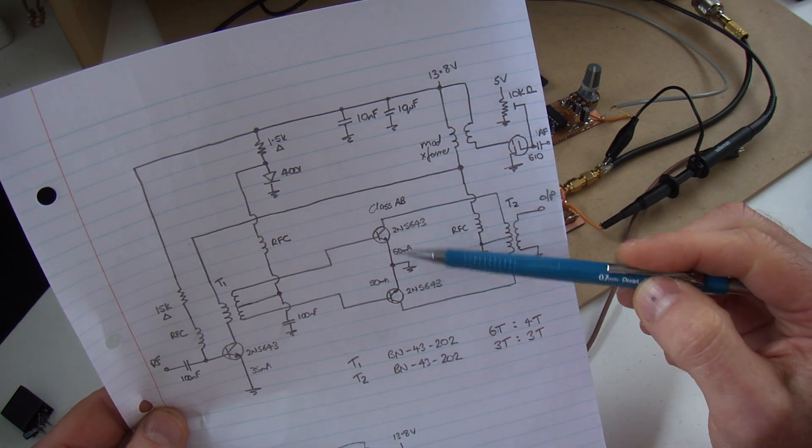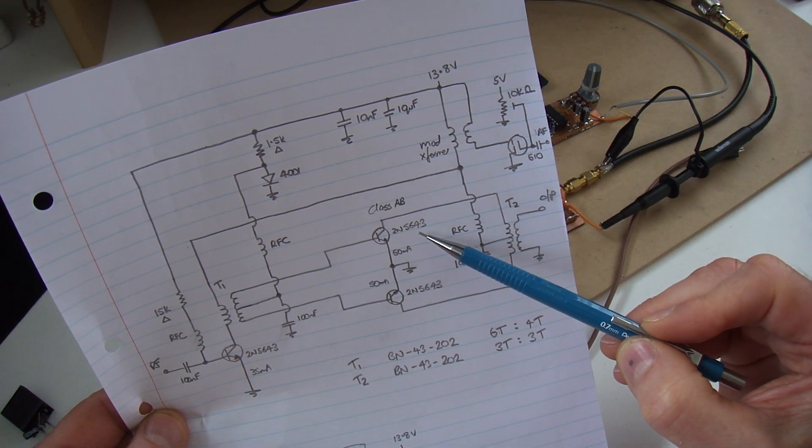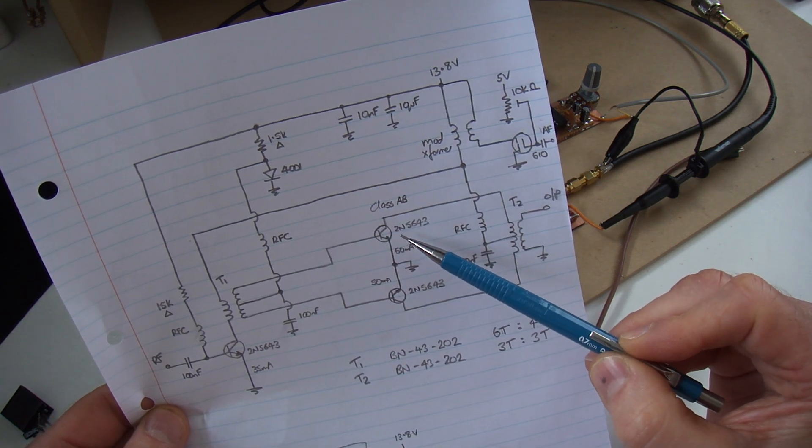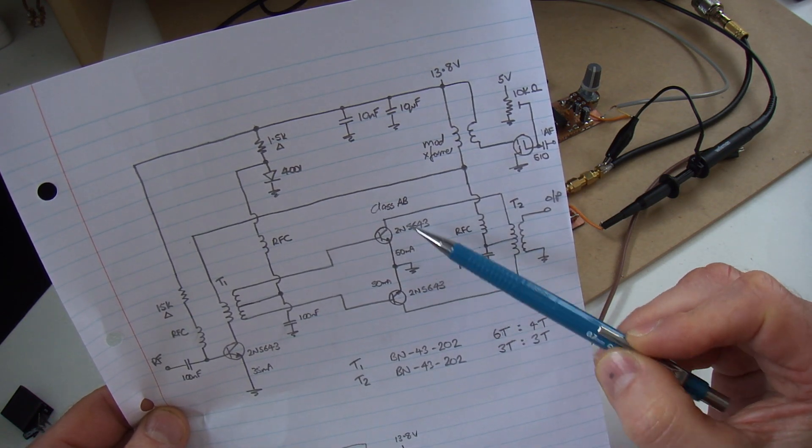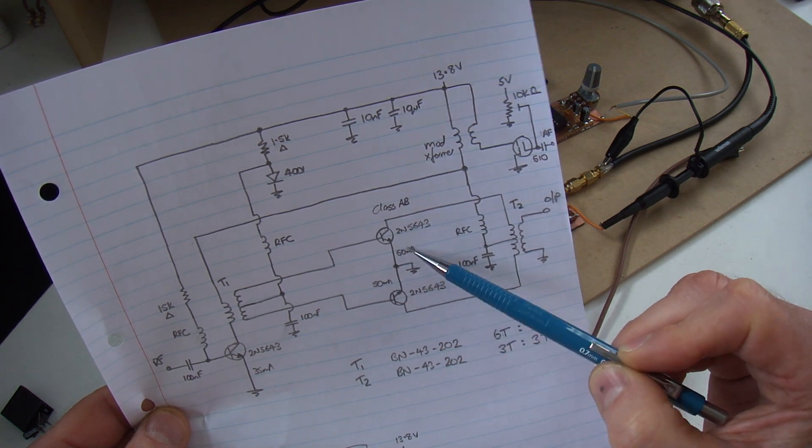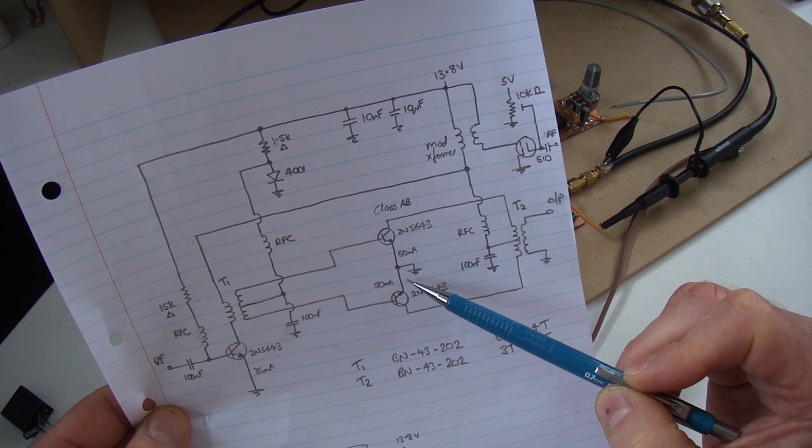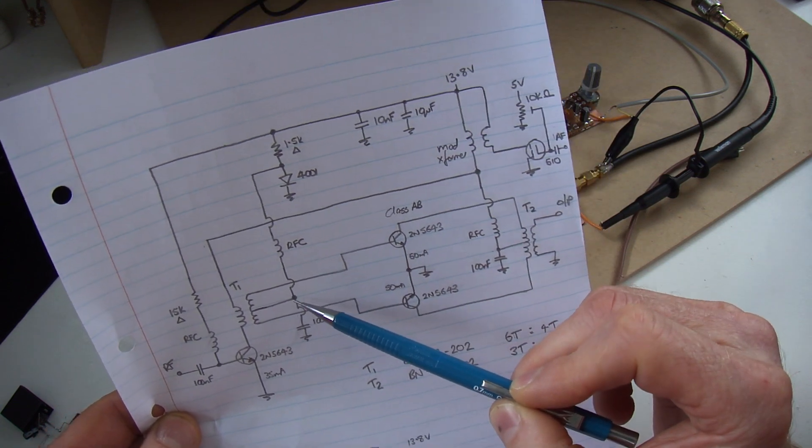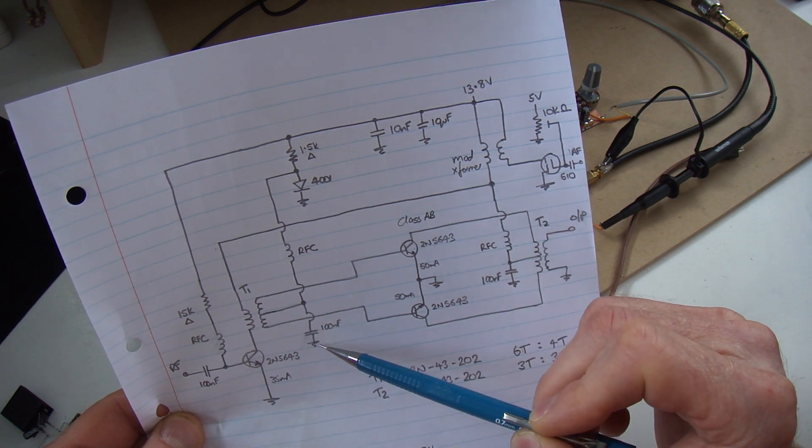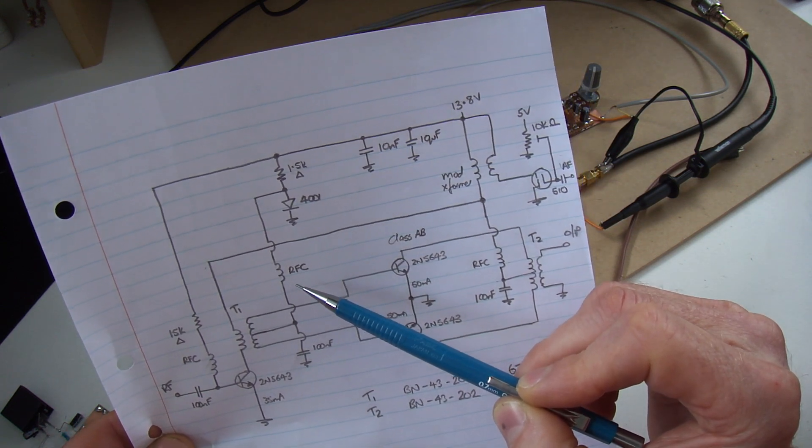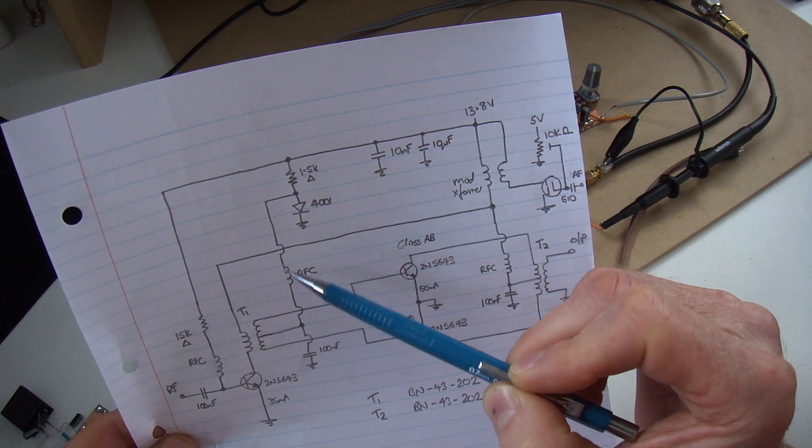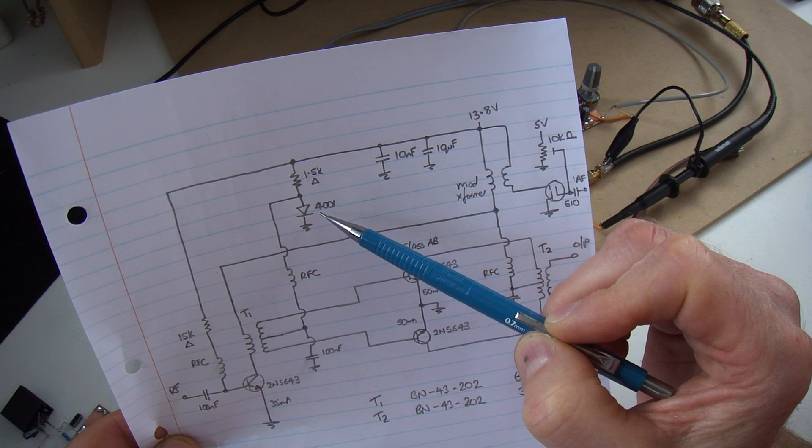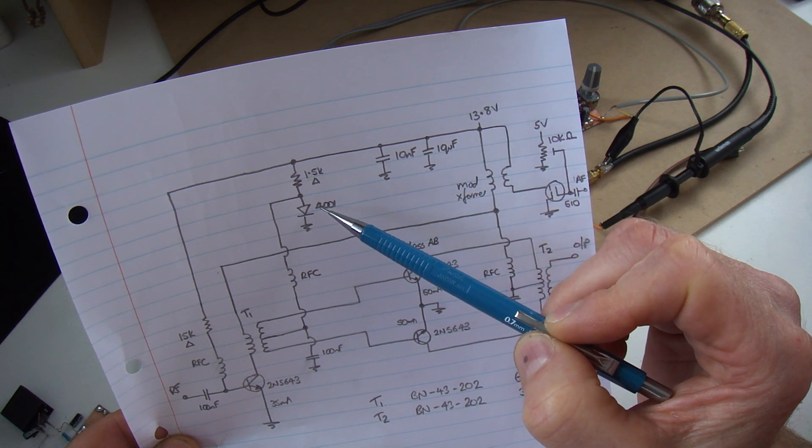So the secondary stage, class AB push-pull, using those two 5643s. They were also in a push-pull configuration out of the old radio. I did not have a circuit diagram, so I managed to just look back to see how it was configured, but I have no idea what the quiescent current was or anything like that. What I elected to do in the end, in terms of the bias coming up through another RFC, I've gone for a very simple, it's not ideal, but it's a simple little biasing network here which was enough to get up and running.